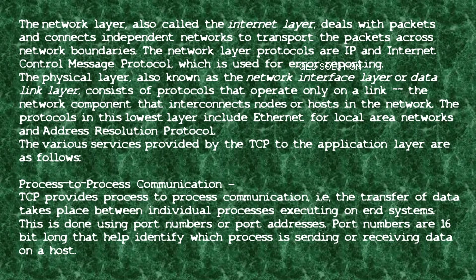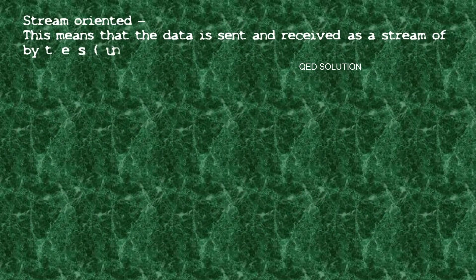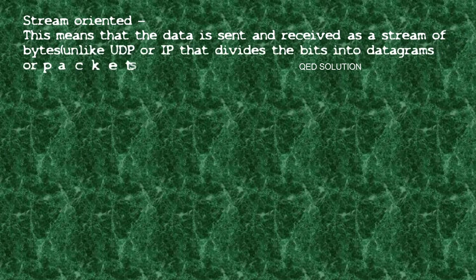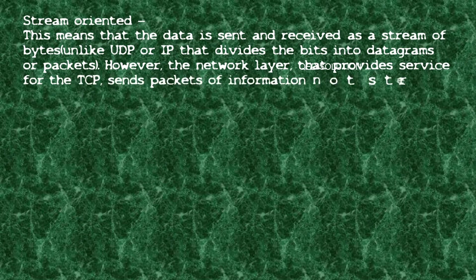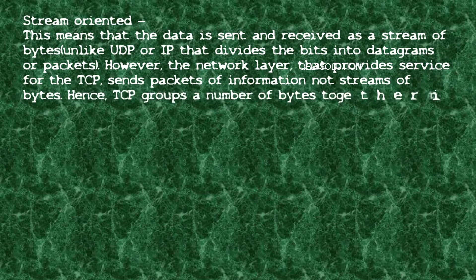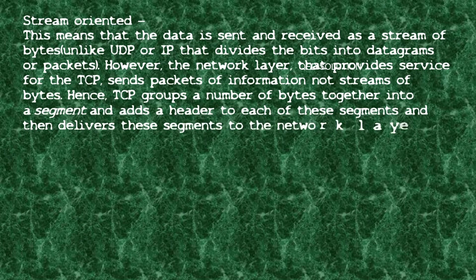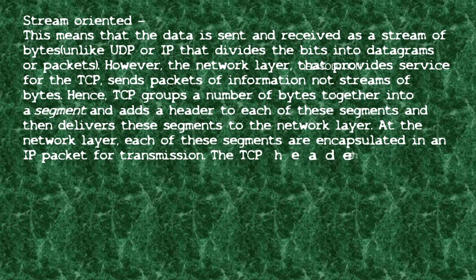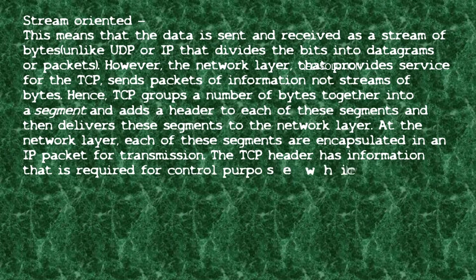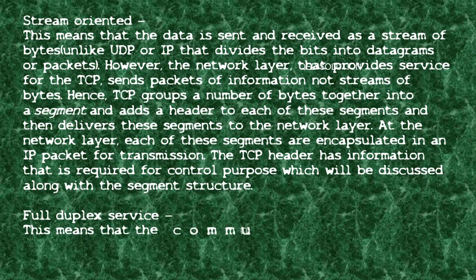The various services provided by TCP to the application layer are as follows. Process-to-process communication: TCP provides process-to-process communication — the transfer of data between individual processes executing on end systems — using port numbers, which are 16 bits long. Stream-oriented: data is sent and received as a stream of bytes, unlike UDP or IP which divides bits into datagrams or packets. TCP groups bytes into segments, adds a header, and delivers them to the network layer where segments are encapsulated in an IP packet.